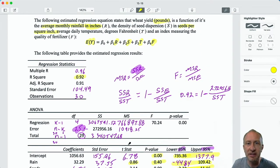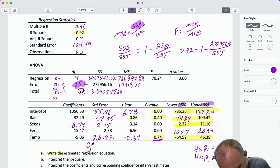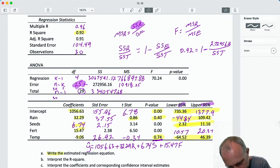So let's just jump into it. We've got this estimated regression equation showing wheat yield as a function of rainfall, seed dispersion, temperature, and fertilizer quality. So after going through all of this, we have our estimated equation that gives us these coefficients. So if we write this out, I have my intercept is 1056.63 plus 32.29 rain plus 6.74 seeds plus 15.47 fertilizer minus 9.06 temperature. Okay, so we've got our estimated regression equation.